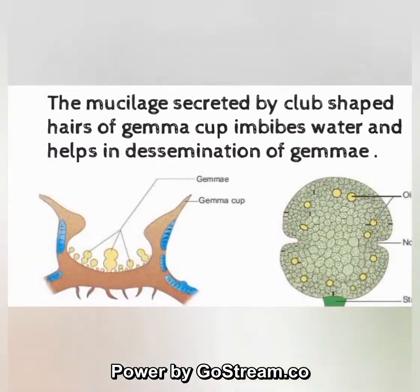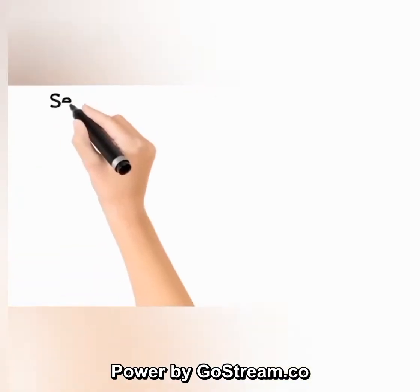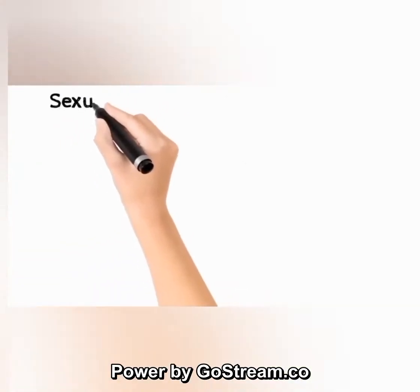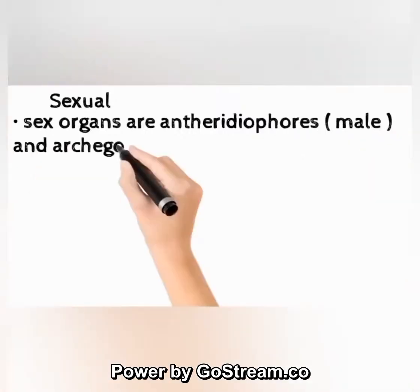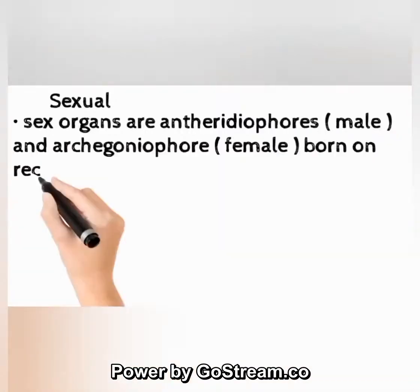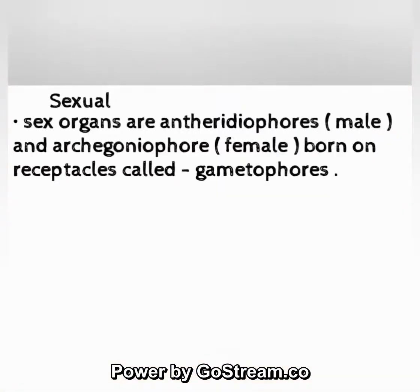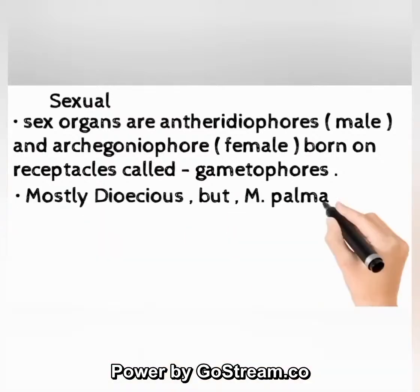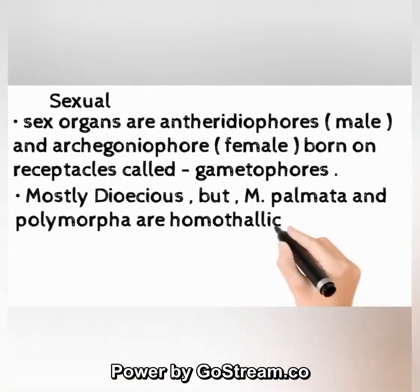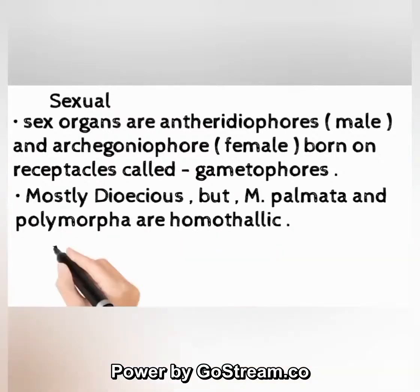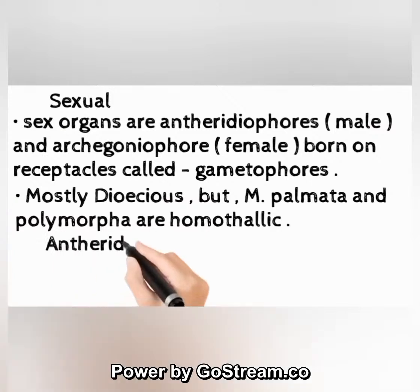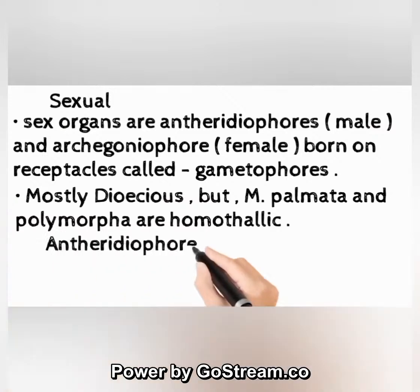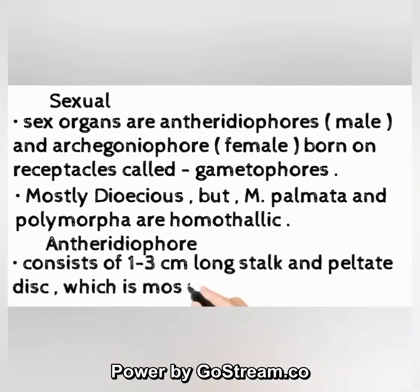Sexual reproduction: sex organs are antheridiophores (male) and archegoniophores (female), borne on receptacles called gametophores. Mostly dioecious, but M. palmata and M. polymorpha are homothallic. The antheridiophore consists of a 1–3 cm long stalk and a peltate disc, mostly four-lobed, anatomically similar to the thallus.